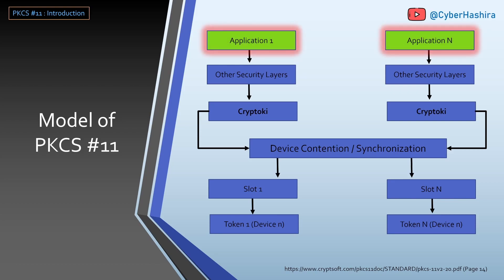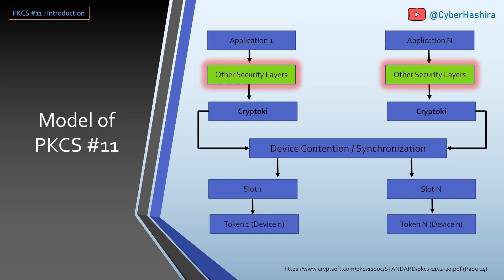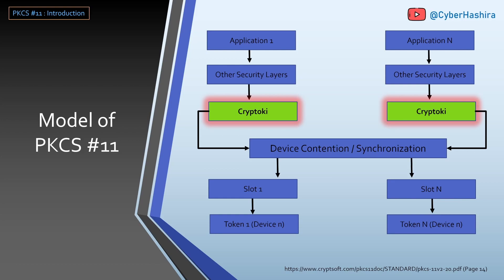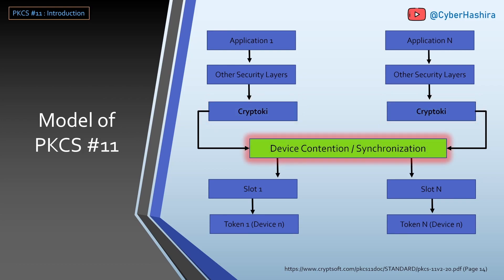In this diagram, at the top is an application which wants to use a hardware token. There can be multiple applications trying to use that hardware. The request for a crypto operation from an application first goes through the usual security layer, such as access control, permissions, or firewall. The CryptoKI library receives those requests and passes them to the hardware device — this library can be a DLL file on Windows or a shared library (.so file) on Linux. Once the hardware receives those requests it processes them, then sends the processed data back to the application along with a return code. The processed data depends on the crypto operation requested — it could be encrypted data, a signature, a hash, decrypted data, or a key.